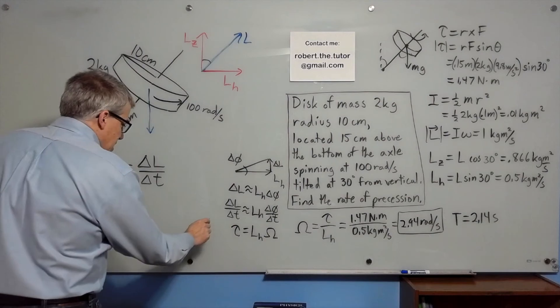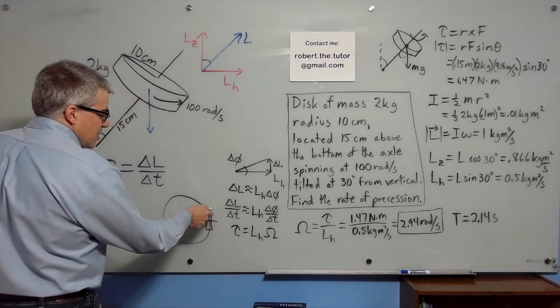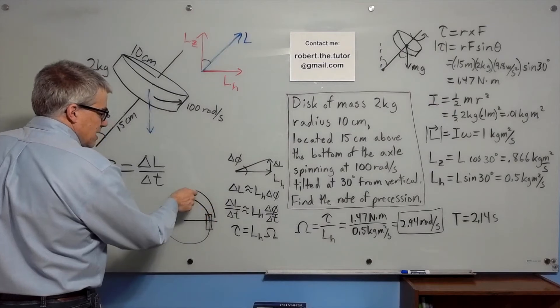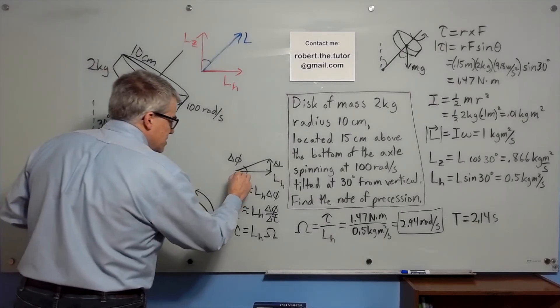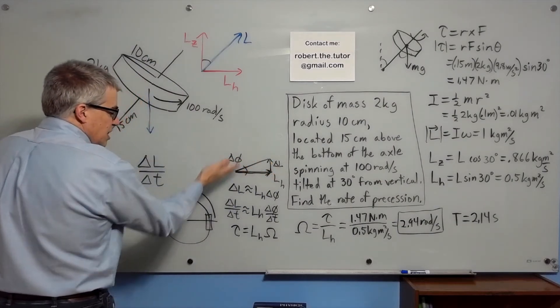Because in a bird's eye view of this, say it's like here, and it's going to be wobbling around like this. The rate of that happening, if this is L, and this is the change in L, and this is the change in phi, where phi is going to be the horizontal angle that the top is sweeping through.